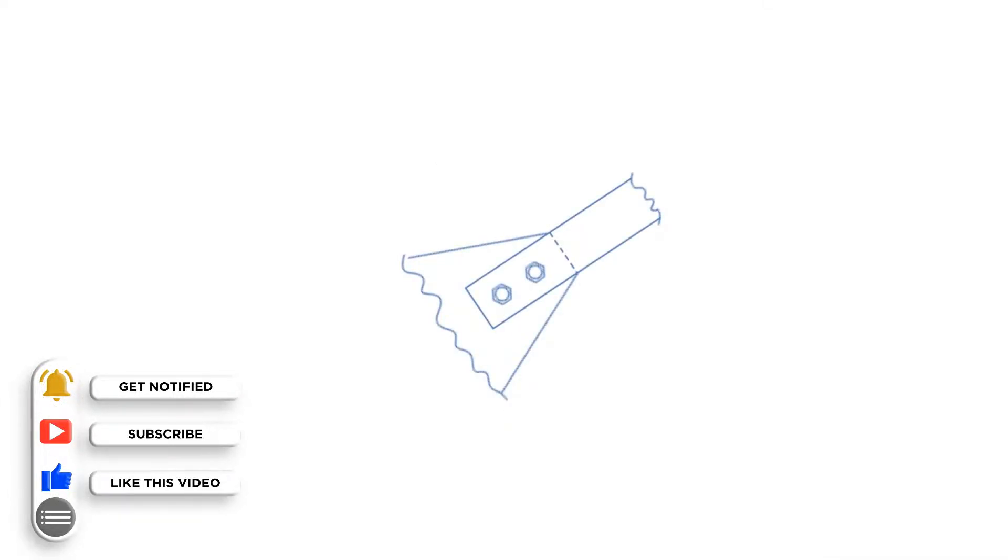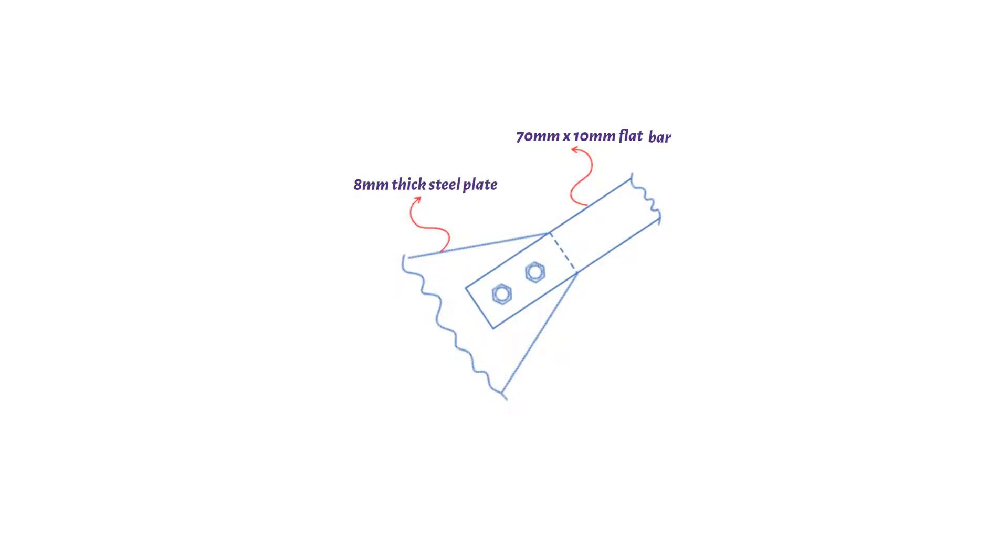Let's take an example. Here we have a bolted connection between a 70 mm by 10 mm flat mild steel bar and 8 mm thick steel plate. We will use two 22 mm diameter grade 4.6 ordinary bolts in 24 mm diameter holes, and characteristic yield strength is 275 megapascals.